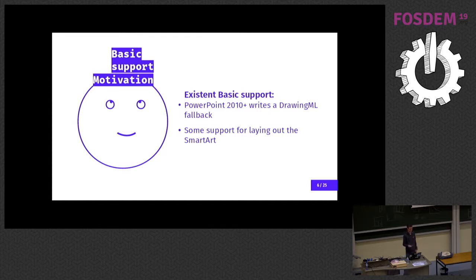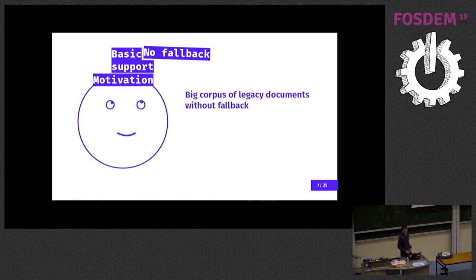It's still possible to show something sensible; it's just a matter of tracking down what part of the SmartArt description is not handled at import time and how to fix that, what's the missing implementation piece there. You could say this is not a real issue—all newer PowerPoint versions write this DrawingML fallback—but the problem is there's a large corpus of legacy documents which are affected by this no DrawingML fallback problem.